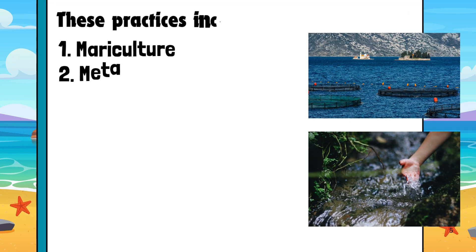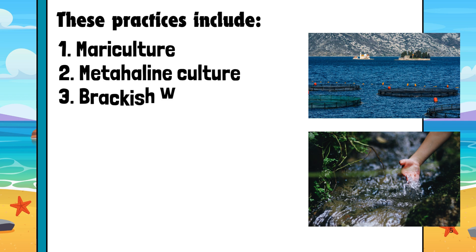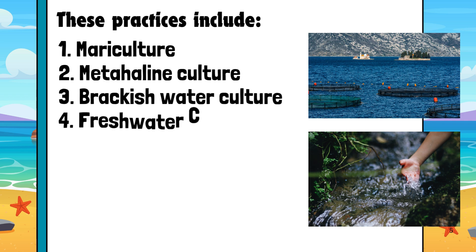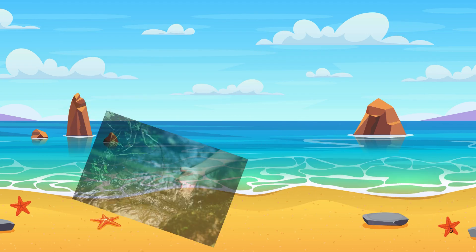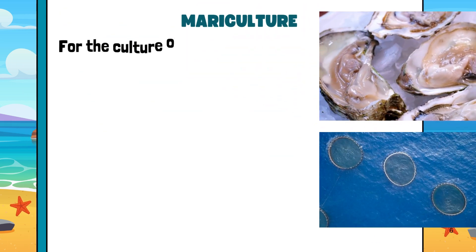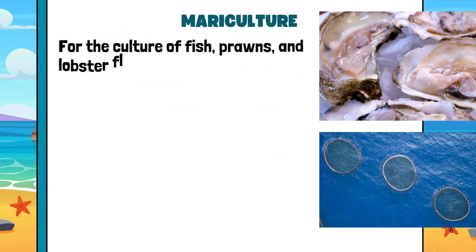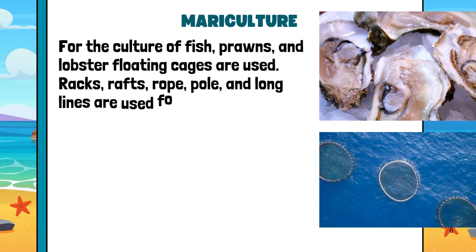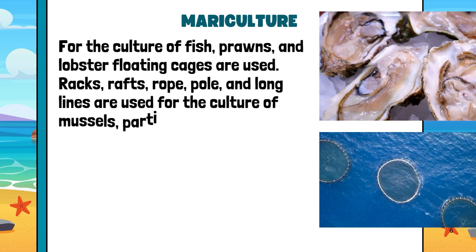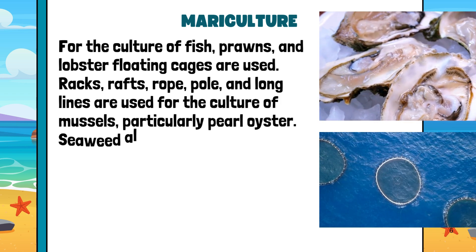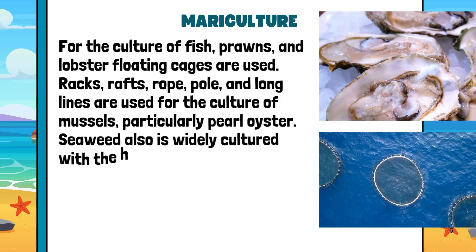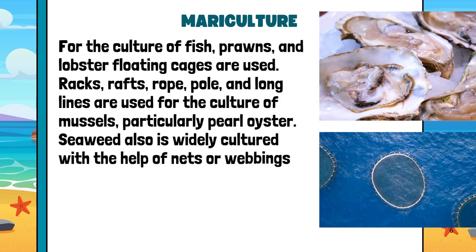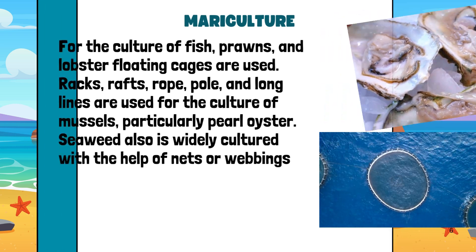These practices include: 1. Mariculture, 2. Metahaline culture, 3. Brackish water culture, 4. Freshwater culture. Mariculture: For the culture of fish, prawns, and lobster, floating cages are used. Racks, rafts, rope, pole, and long lines are used for the culture of mussels, particularly pearl oyster. Seaweed also is widely cultured with the help of nets or webbings.